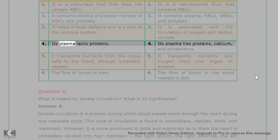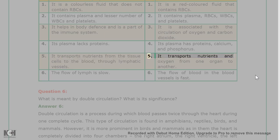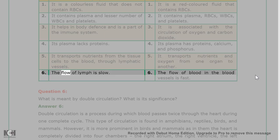4. Lymph's plasma lacks proteins; blood's plasma has proteins, calcium, and phosphorus. 5. Lymph transports nutrients from the tissue cells to the blood through lymphatic vessels; blood transports nutrients and oxygen from one organ to another. 6. The flow of lymph is slow; the flow of blood in the blood vessels is fast.